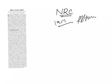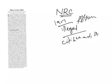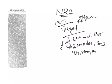The NRC Assam is a register containing names of Indian citizens in Assam. It will contain the names of genuine Indian citizens and help the government check illegal migrants. NRC will be updated as per the provisions of the Citizenship Act of 1955 and Citizenship Rules of 2003. It will include persons whose names appear in any electoral rolls up to the midnight of 24th March 1971, or in NRC 1951, and their descendants.